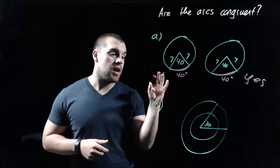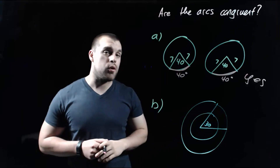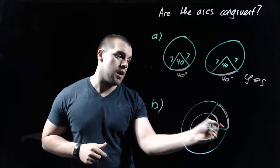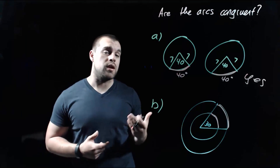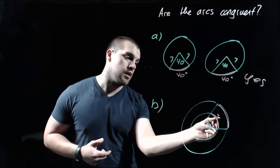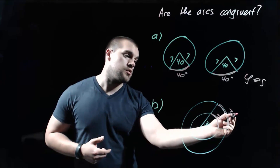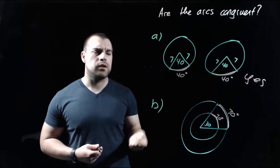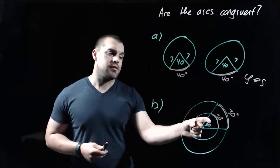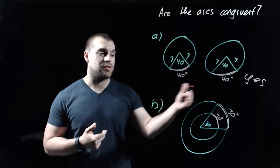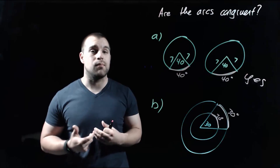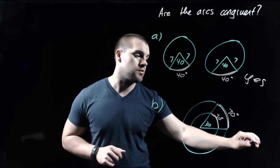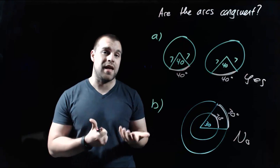In example B, we've got a circle within another circle. A 30-degree central angle cuts an arc on the small circle and an arc on the big circle. Since the central angle is 30 degrees, both arcs measure 30 degrees — so the first condition works, they have the same degree measure. But do they have the same radius length? No, they don't. The inner circle has a much shorter radius than the outer circle. Since we're dealing with different-size circles, these arcs are not congruent.